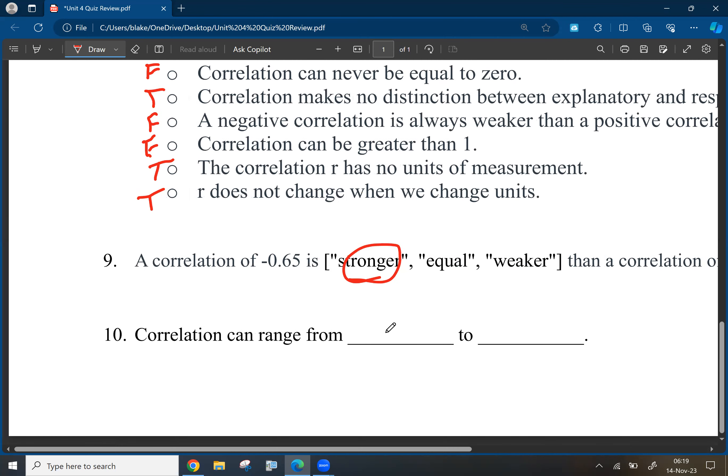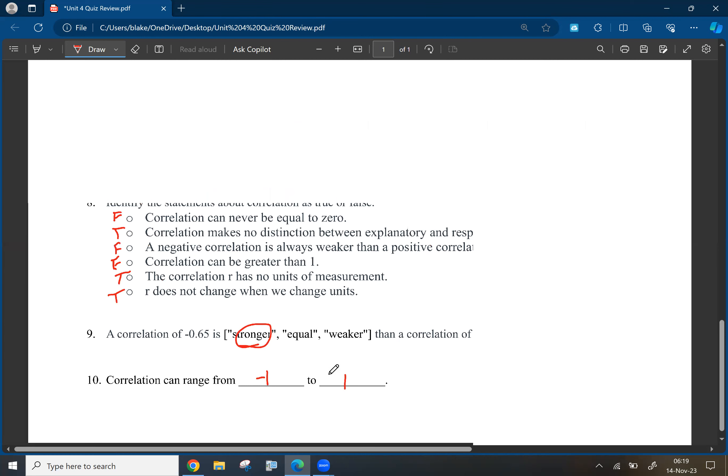So, correlation can range from negative one to positive one. Of course, that's it. That is it. That's the whole study guide.